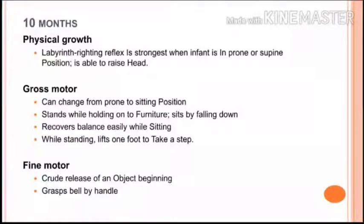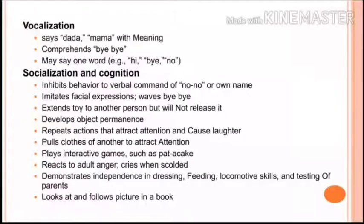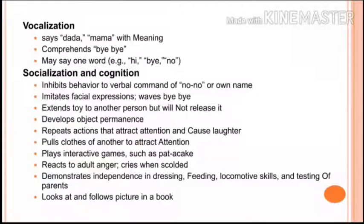In fine motor at ten months, crude release of an object is beginning. In vocalization, the baby says 'dada' and 'mama' with meaning, comprehends 'bye-bye,' and may say one word. In socialization, the baby inhibits behavior in response to 'no-no' or its own name, pulls others' clothing to attract attention, plays pat-a-cake, and looks at and follows pictures in a book.